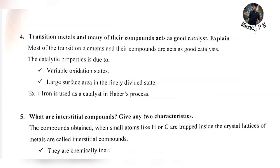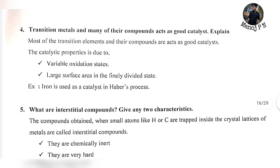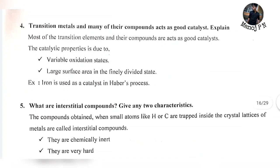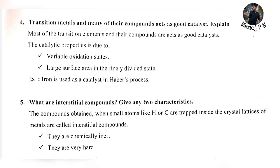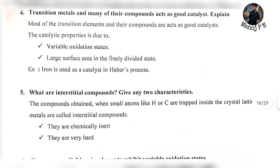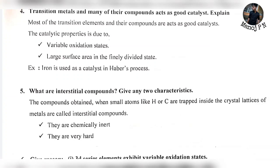Transition metals and many of their compounds act as good catalysts. The catalytic properties are due to variable oxidation states and large surface area in the finely divided state. For example, iron is used as a catalyst in Haber's process.